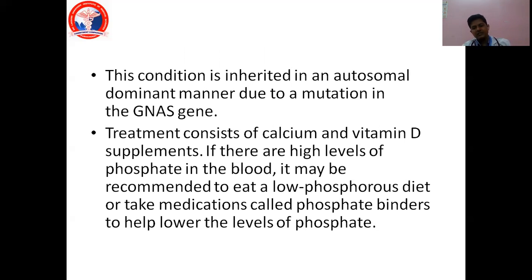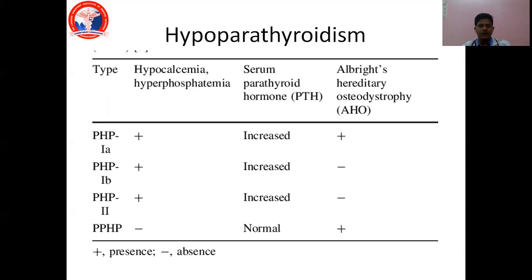The disease is due to mutation in the GNAS gene. Treatment of all hypocalcemia is by supplementing with calcium and vitamin D. Types of pseudo-hypoparathyroidism include: type 1a with the full constellation of AHO symptoms; type 1b with resistance to parathyroid hormone but without osteodystrophy; type 2, similar to type 1b but distinguished by specific biochemical tests; and pseudo-pseudo-hypoparathyroidism where parathyroid hormone is normal but the AHO phenotype is present.